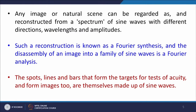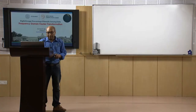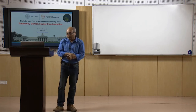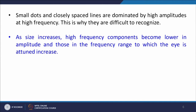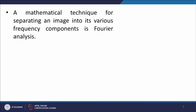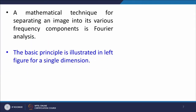Spots, lines, and bars that form targets for tests of acuity are themselves made up of sine waves. Small dots and clearly spaced lines are dominated by high amplitude at high frequency, which is why they are difficult to recognize. As the size of these dots increases, high frequency components become lower in amplitude, and those in the frequency range to which the eye is attuned increase, making perception and distinction easier. Very low frequency components increasing in amplitude effectively degrade perception and distinction. Mathematically, the technique for separating an image into various frequency components is Fourier analysis.